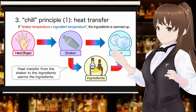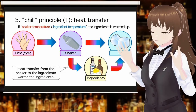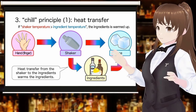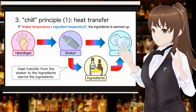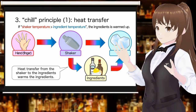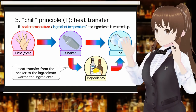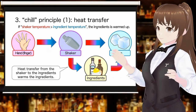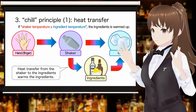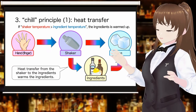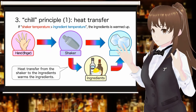The hottest shake-related object is the hand or fingers touching the shaker. Conversely, the lowest temperature is the ice. Considering the relationship between the temperature of the shaker and cocktail ingredients, if the temperature of the shaker is higher than the temperature of the cocktail ingredients, the cocktail ingredients will be warmed by the heat of the shaker.